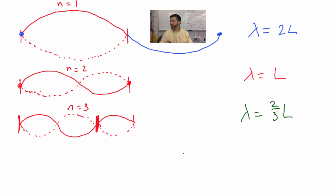I'm going to rewrite each of these just slightly different so maybe you can see the pattern here. Notice that this is the same thing as two L over one. And this is equal to two L over two. And this is equal to two L over three.